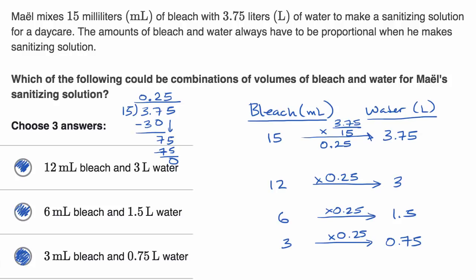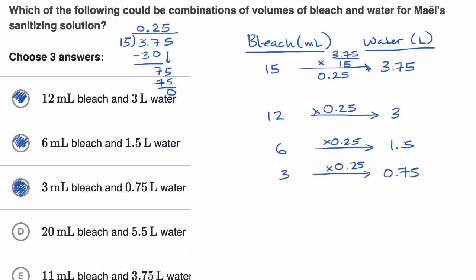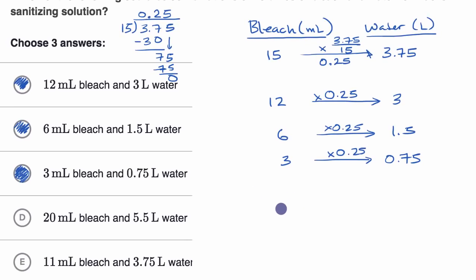But let's just verify that the next two are not good answers. So let's see, if I go from 20 to 5.5, am I multiplying by 0.25? No, 0.25, which is the same thing as 1 fourth. 1 fourth times 20 is 5, not 5.5. So that doesn't work.